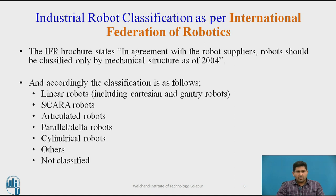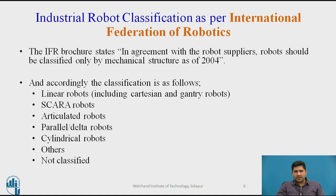IFR classifies robots as SCARA, articulated robots, parallel or delta robots, cylindrical robots, and then another group of others and non-classified. If you notice, they have actually dropped the spherical configuration here because this configuration is no longer used by any top manufacturer. Probably there may be a very old configuration lying around somewhere, but it is no longer used. So IFR now doesn't list the spherical configuration, but they do have cylindrical, parallel, articulated, SCARA, and the Cartesian configuration.